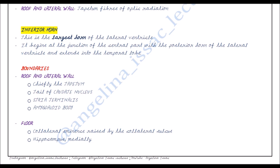Concising the important points on the inferior horn: this is the largest horn of the lateral ventricle. It begins at the junction of the central part with the posterior horn and extends into the temporal lobe. The roof and lateral wall are formed chiefly by the tapetum, tail of the caudate nucleus, stria terminalis, and amygdaloid body. The floor is formed by the collateral eminence raised by the collateral sulcus and the hippocampus medially.